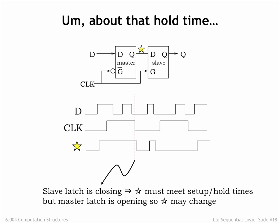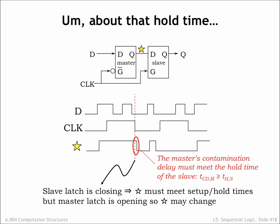There is one tricky problem we have to solve when designing the circuitry for the register. On the falling clock edge, the slave latch transitions from open to closed, so its input, the star signal, must meet the setup and hold times of the slave latch in order to ensure correct operation. The complication is that the master latch opens at the same time, so the star signal may change shortly after the clock edge. The contamination delay of the master latch tells us how long the old value will be stable after the falling clock edge, and the hold time on the slave latch tells us how long it has to remain stable after the falling clock edge. So to ensure correct operation of the slave latch, the contamination delay of the master latch has to be greater than or equal to the hold time of the slave latch.